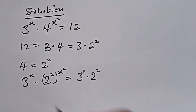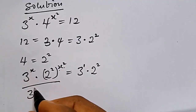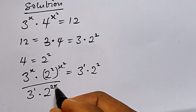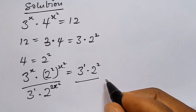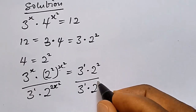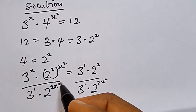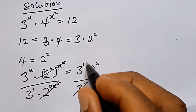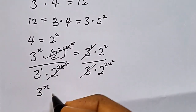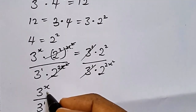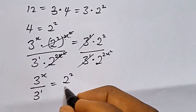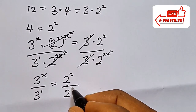Dividing through, we have 3 raised to power X over 3 raised to power 1, multiplied by 2 raised to power 2X squared, on the left. On the right we have 3 raised to power 1 multiplied by 2 raised to power 2X squared. These cancel each other, so we're left with 3 raised to power X over 3 raised to power 1, equals 2 raised to power 2 over 2 raised to power 2X squared.